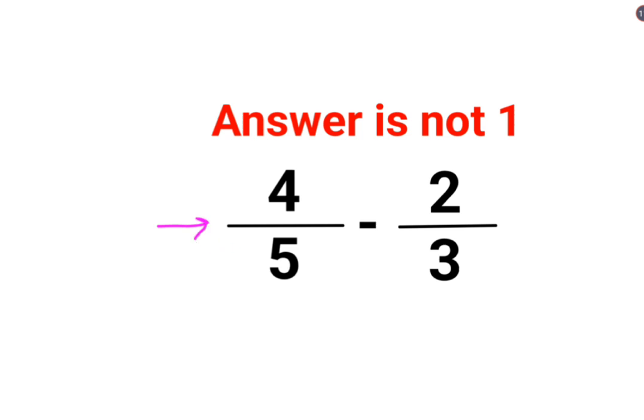Here a lot of people thought that when you do subtraction between fractions, we can directly do it this way: 4 minus 2, 5 minus 3. This gets you 2, this also gets you 2. So this and this get cancelled and that is how they got the answer as 1.